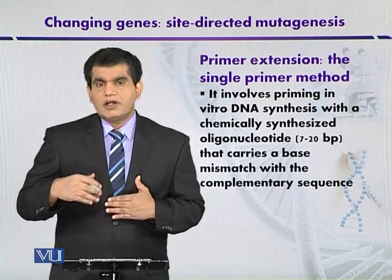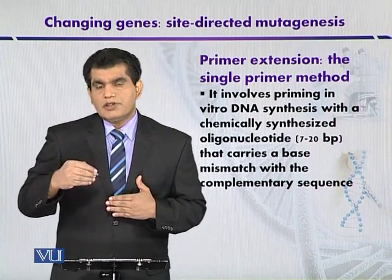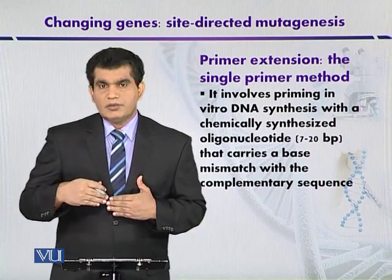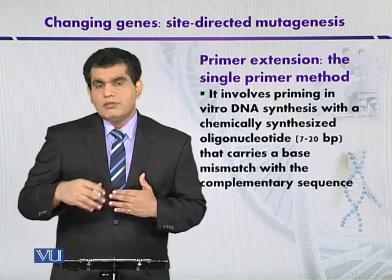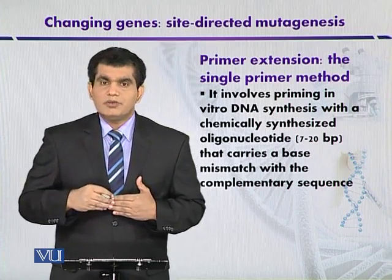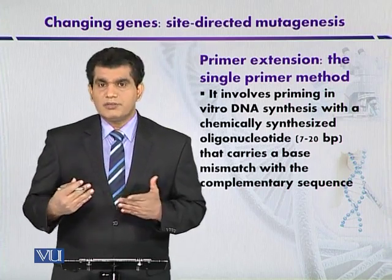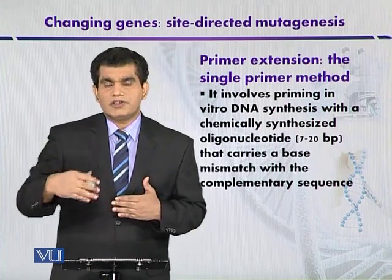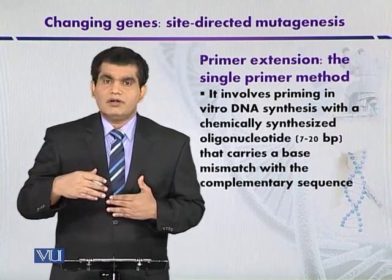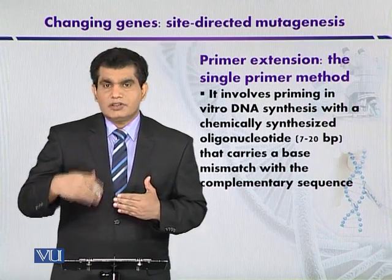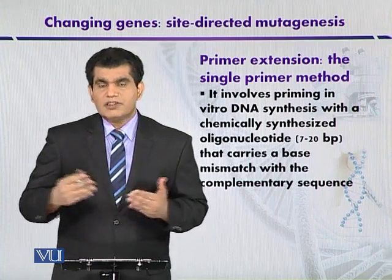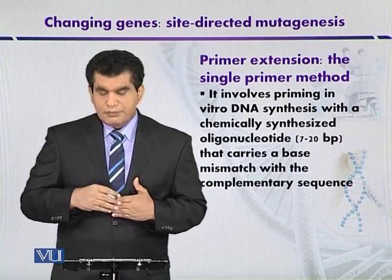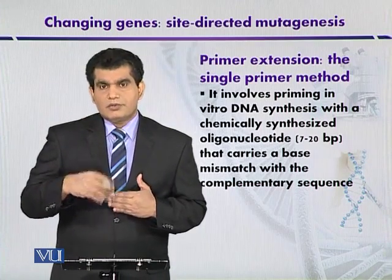For this purpose, it is important that the target DNA is available in single-stranded form, so that the primer containing one or two mismatched bases can be annealed to it. For this, M13 vector, which is a single-stranded DNA vector, can be used. In addition, plasmid DNA which is double-stranded can be converted into partial single-stranded form, making it equally suitable.